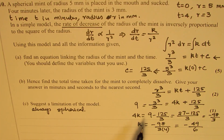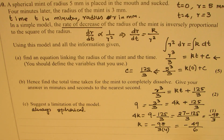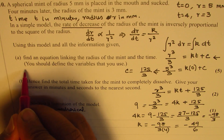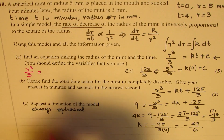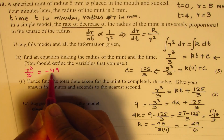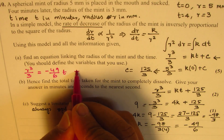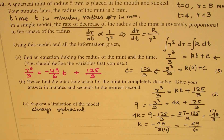So now that gives us the relation — find the equation linking radius of the mint. The equation is: r³ over 3 equals minus 49 over 6 times t plus 125 over 3. That is the solution for part A.